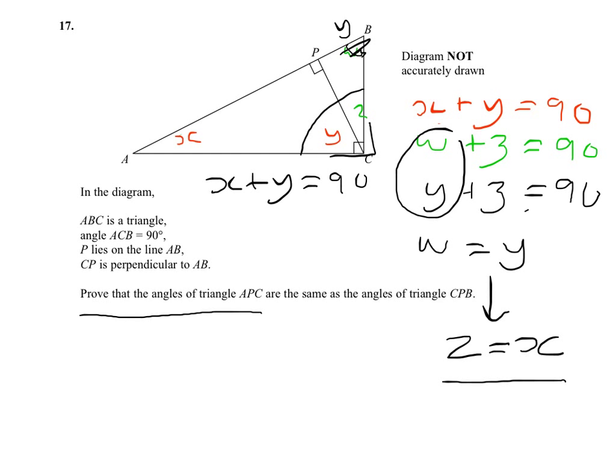We now know that the angle W is Y. So if Y plus Z equals 90, then Z must equal X. So I hope that makes that clear.